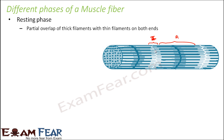The I-band is all made up of thin filaments. The center of the A-band is all made up of thick filaments — this portion is entirely thick filaments with no overlap in the central portion. There is some overlap between the thin filaments and the thick filaments in the regions on either side of the center.